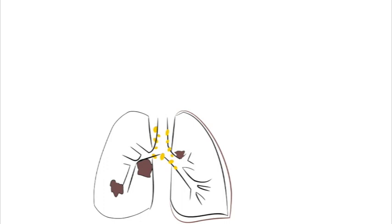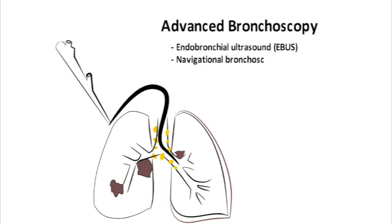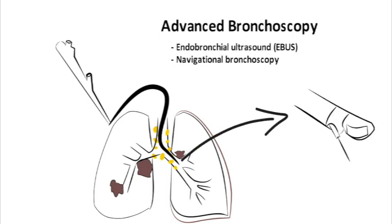Interventional pulmonologists commonly perform advanced diagnostic bronchoscopy, which utilizes newer technologies such as endobronchial ultrasound, commonly called EBUS, and computer-assisted navigation. EBUS is primarily used to diagnose thoracic malignancy and sample lymph nodes. Peripheral EBUS is particularly important in diagnosing thoracic malignancies and has surpassed mediastinoscopy as the main tool for mediastinal staging. Endobronchial ultrasound comes in two forms: convex and radial.